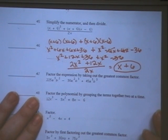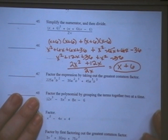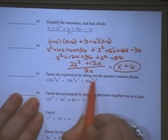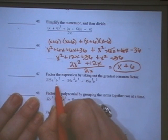For number 47, you have to factor the expression by taking out the greatest common factor. The greatest common factor between 225, 30, and 45 is 15.